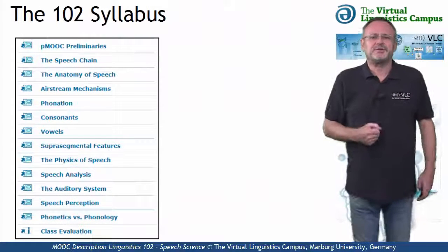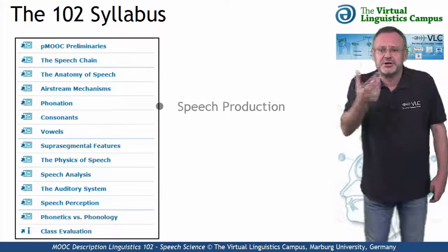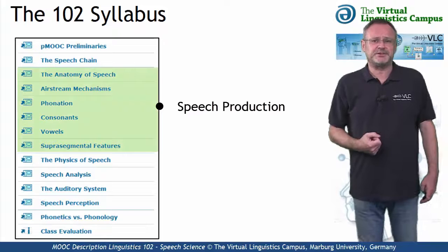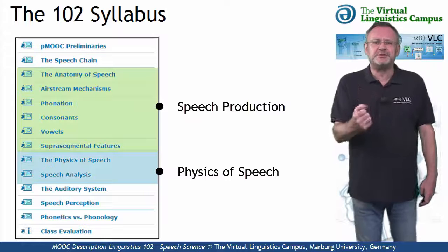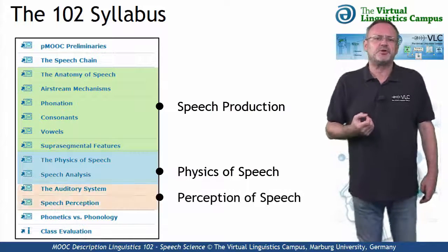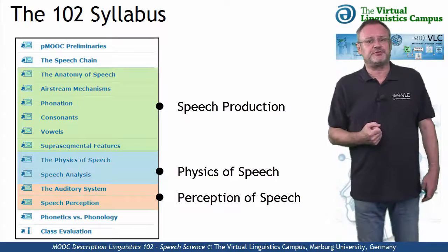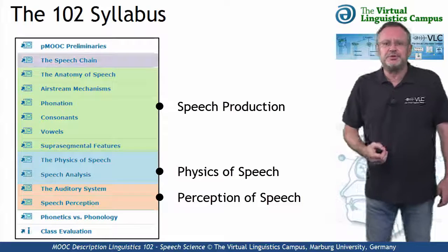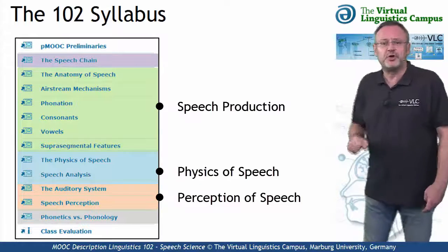Let us now look at the content of Linguistics 102. The first part looks at the production of speech, also known as articulatory phonetics. Then we will deal with the physics of speech, alternatively labeled acoustic phonetics. And the third part focuses on the perception of speech, also referred to as auditory phonetics. These central parts are surrounded by an introductory unit, the speech chain, and a unit that leads from phonetics to phonology.